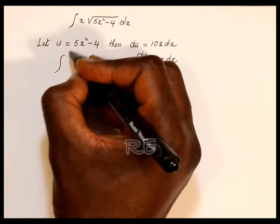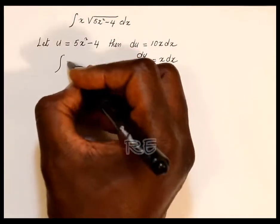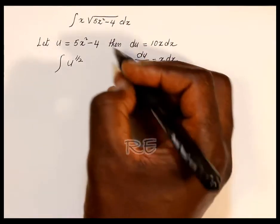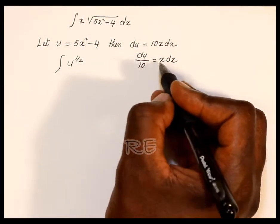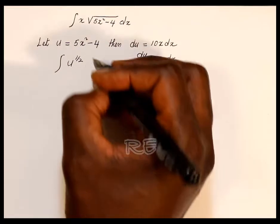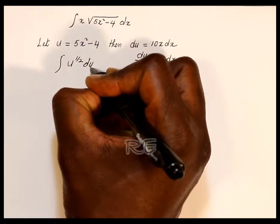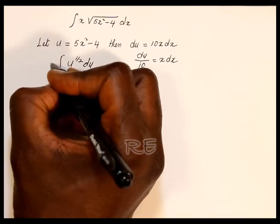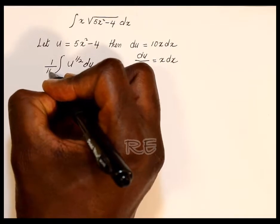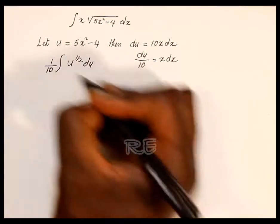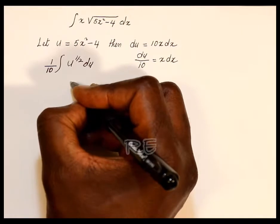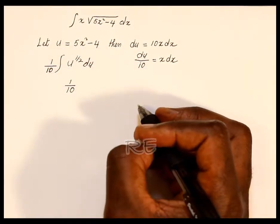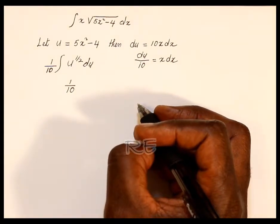So our integral becomes u to the 1 half — that's the fractional exponent for the square root — and x dx is du over 10. So I'm going to write du on this side, and the division will become 1 tenth.